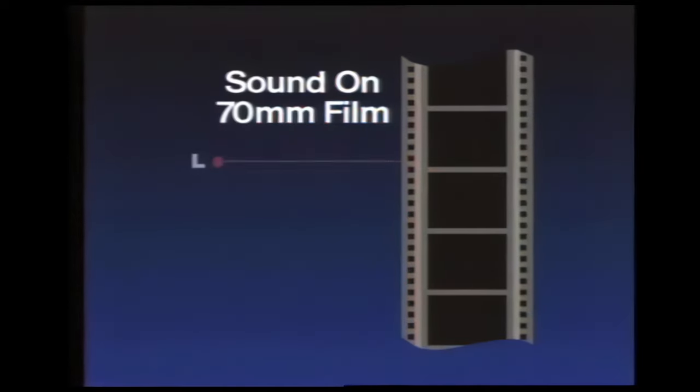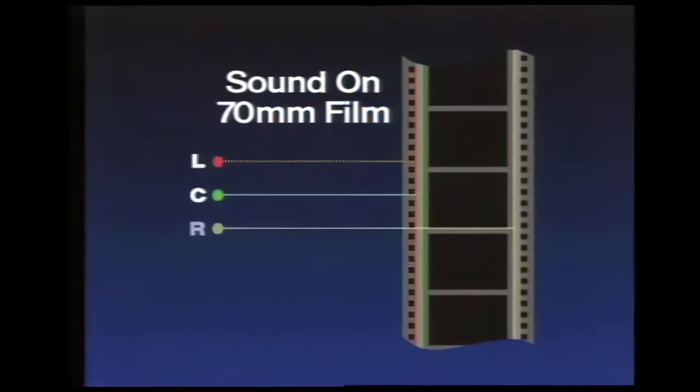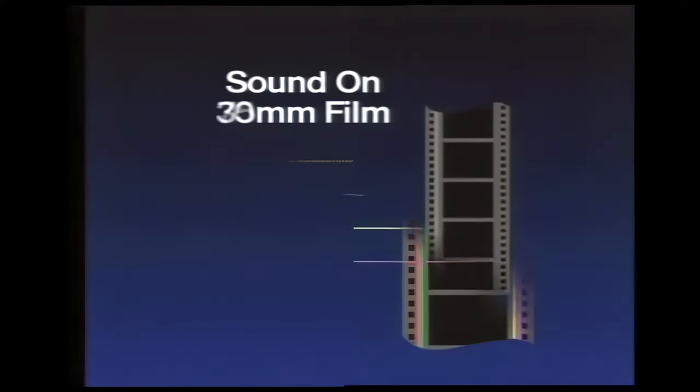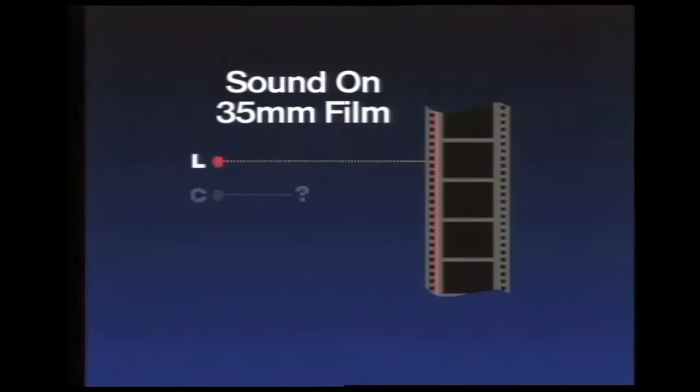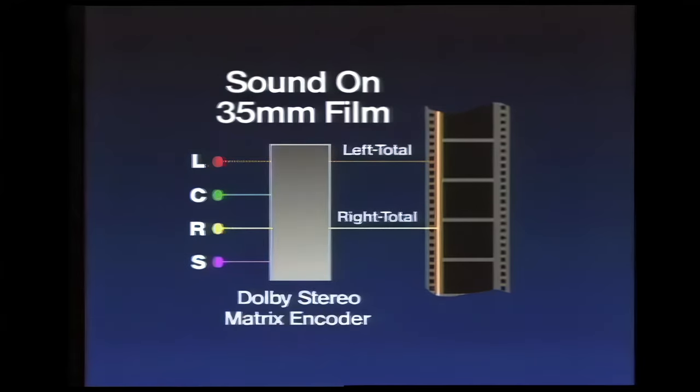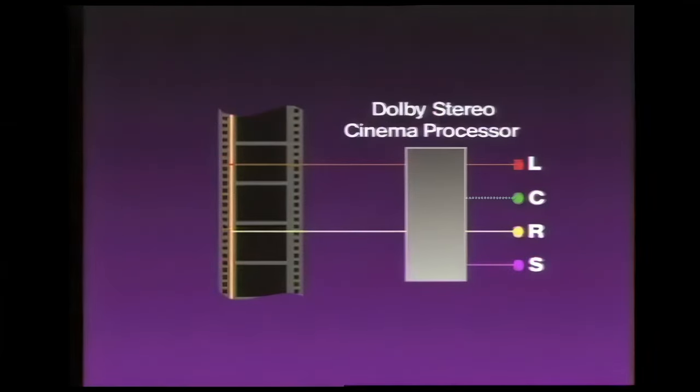A way was needed to put these four channels of sound onto the films shown in theaters. 70mm prints can handle up to six tracks easily, but these are rare due to their extreme cost. The more popular 35mm prints, on the other hand, have room for only two of the four audio tracks. The solution was to combine the four channels into two, using a special matrix encoder. When played back in the theater, a Dolby Stereo Cinema processor decodes the two tracks to recover the four channels again.